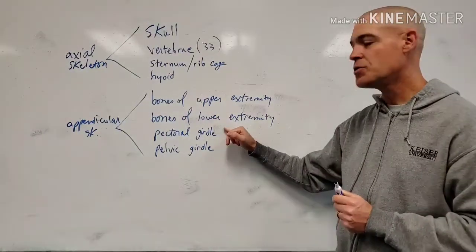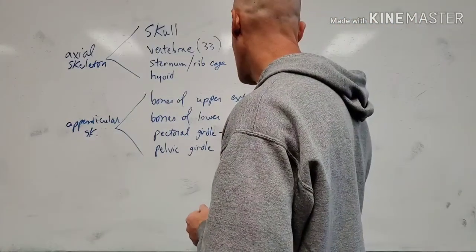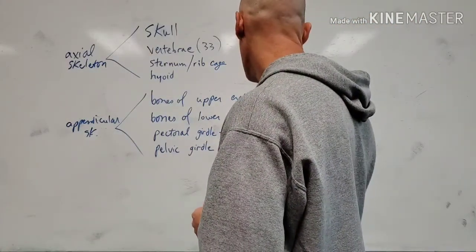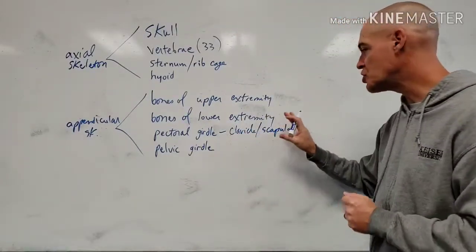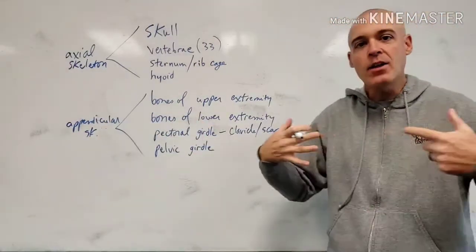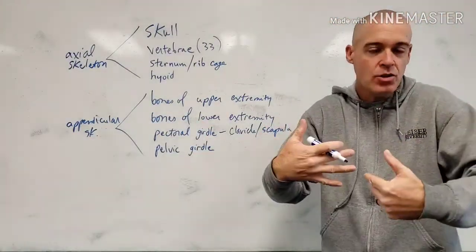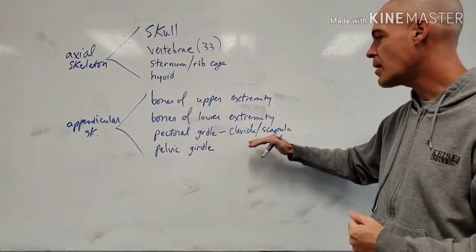So what is considered the bones of the pectoral girdle? Those bones are the clavicle and the scapula. Those two bones are still considered part of the appendicular skeleton, even though they kind of look like they're part of the rib cage because they attach to it, which they're not.